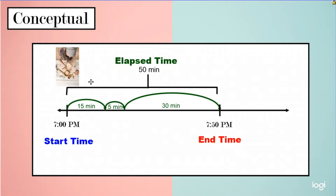Let's take a look at a visual model to understand these three words. We have a visual model of when we are making dinner. We started making dinner at 7 PM — that's labeled as the start time. We ended making dinner at 7:50 PM, so we labeled that the end time. In between the start time and the end time we call that our elapsed time. We did three different activities that totaled up to 50 minutes — the elapsed time between the start and end time was 50 minutes.